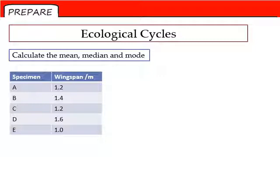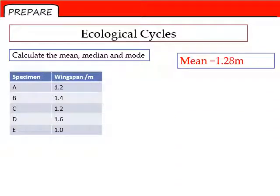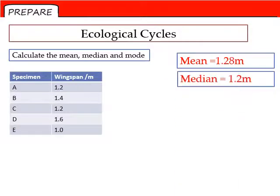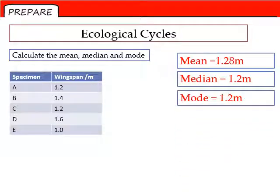Hopefully that's given you long enough to press the pause button because we're going to go through them now. The mean from this data is 1.28 meters. The median, the middle value if you put them in order, is 1.2 meters, and the mode, the one that features most often, is also 1.2 meters. To calculate the mean, of course, we add them all up and divide by the number of values.